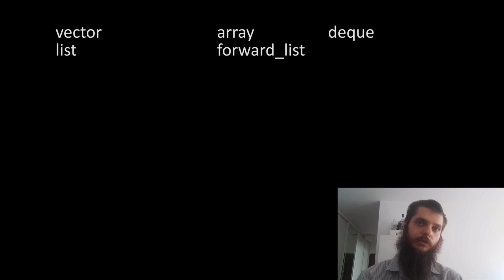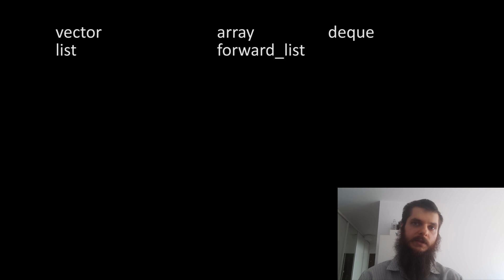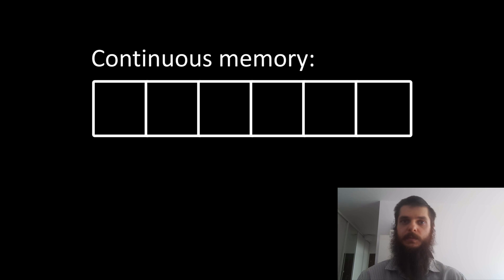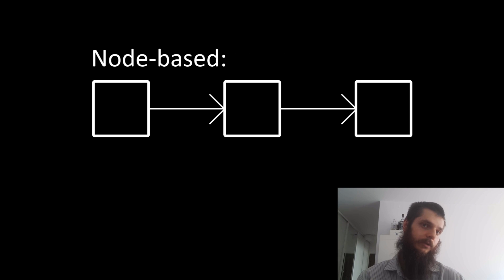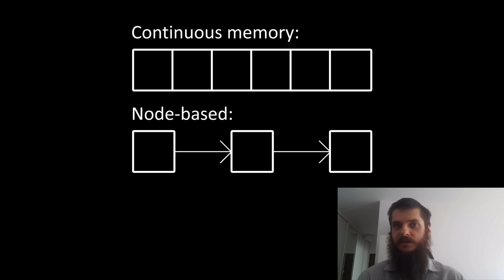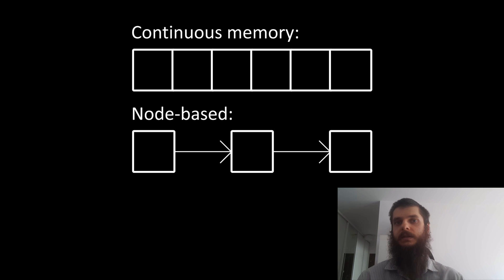So how should you choose any one of them? It all depends on what you want to achieve. You can store elements in continuous memory like vector or array does, you can use a node-based approach like a list or forward list does, or you can try a hybrid approach like a deque does. Each of these approaches has its pros and cons and its own use case.